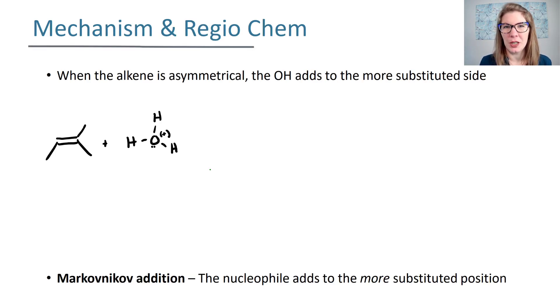The mechanism is going to explain the regiochemistry, so let's look at both at the same time. If you have an alkene that's asymmetrical, the OH is going to add to the more substituted side. Remember we called that the Markovnikov product or a Markovnikov addition.